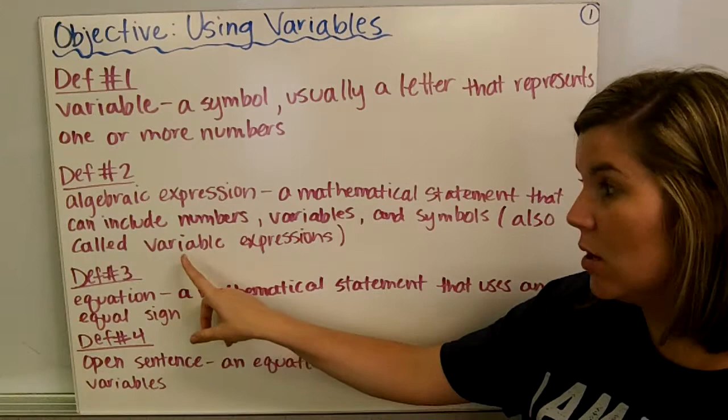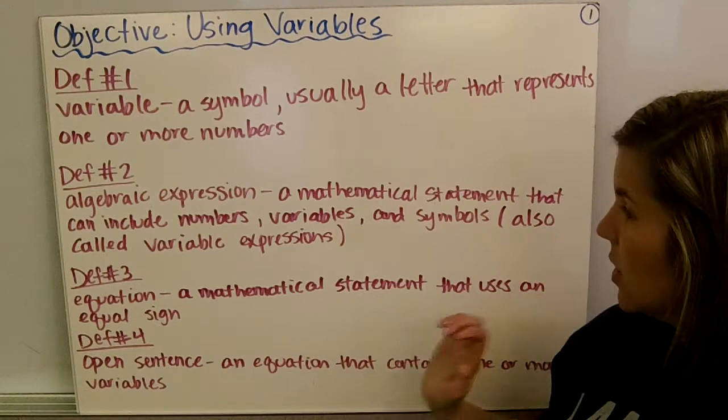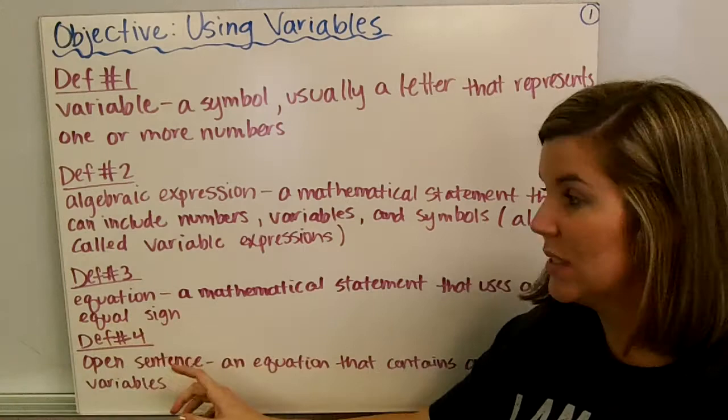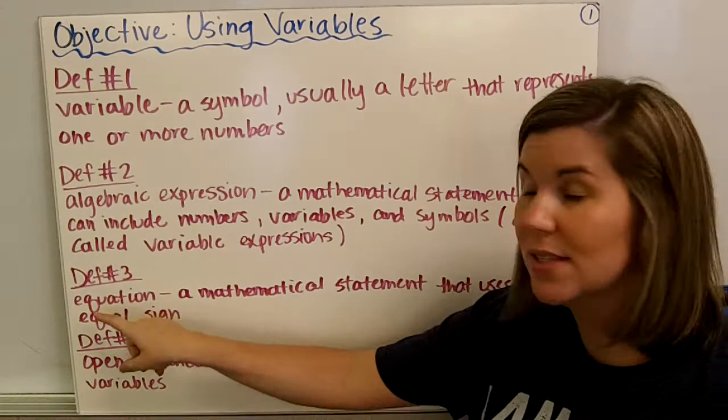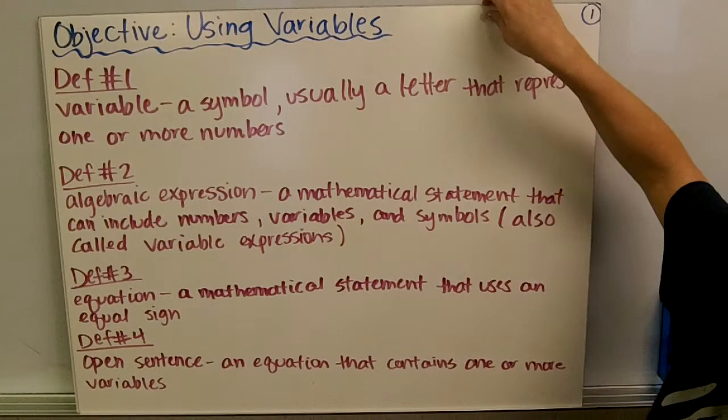Definition number two: an algebraic expression, also called a variable expression, is a mathematical statement that can include numbers, variables, and symbols or operations. Definition number three: an equation is a mathematical statement that uses an equal sign. It's called an expression if it doesn't have an equal sign, but if it does, it's called an equation. Definition number four: an open sentence is an equation that has one or more variables.